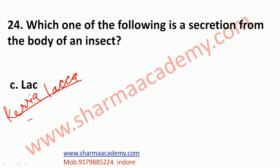Cultivation begins when a farmer gets a stick — a brood log containing eggs ready to hatch — and ties it to the tree to be infested. Thousands of lac insects colonize the branches of the tree and secrete the resinous pigment. It is used in the manufacture of varnishes, sealing wax, shellac, etc. About 2 crore kg of lac is exported from India every year.